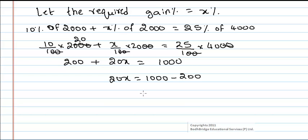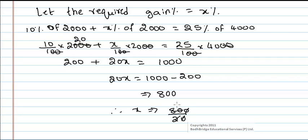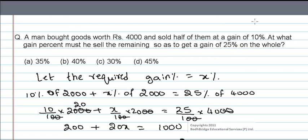This implies 800. Therefore, x, which is the required gain percent, equals 800 divided by 20, which gives 40. So the required gain percent is 40%. From the options, we have option B, that is 40%, so option B is correct.